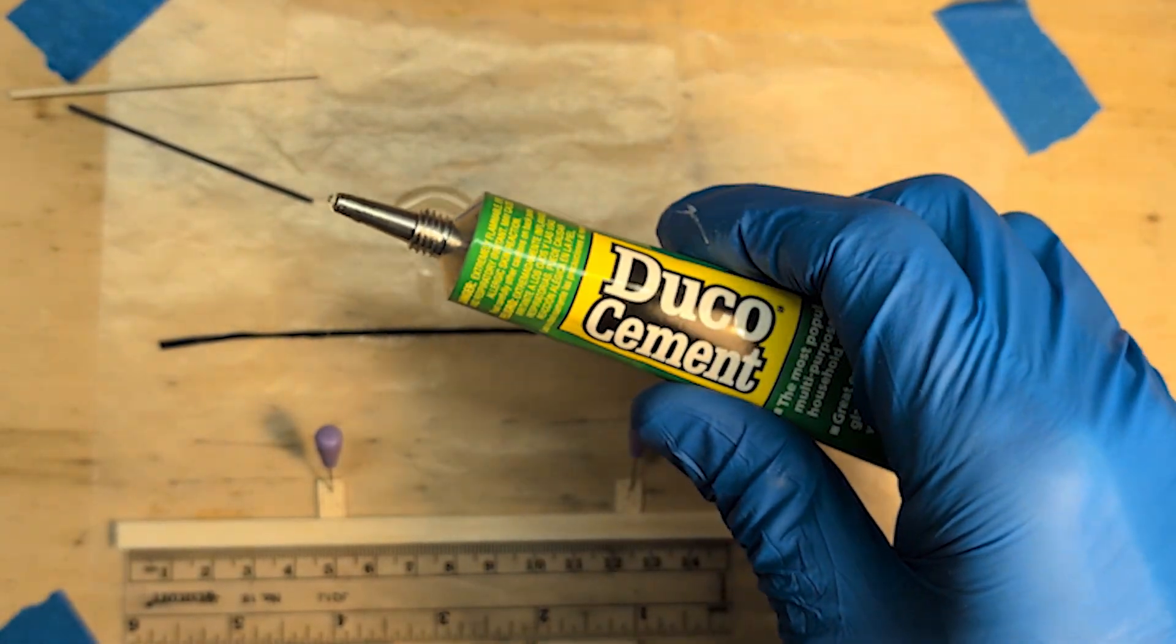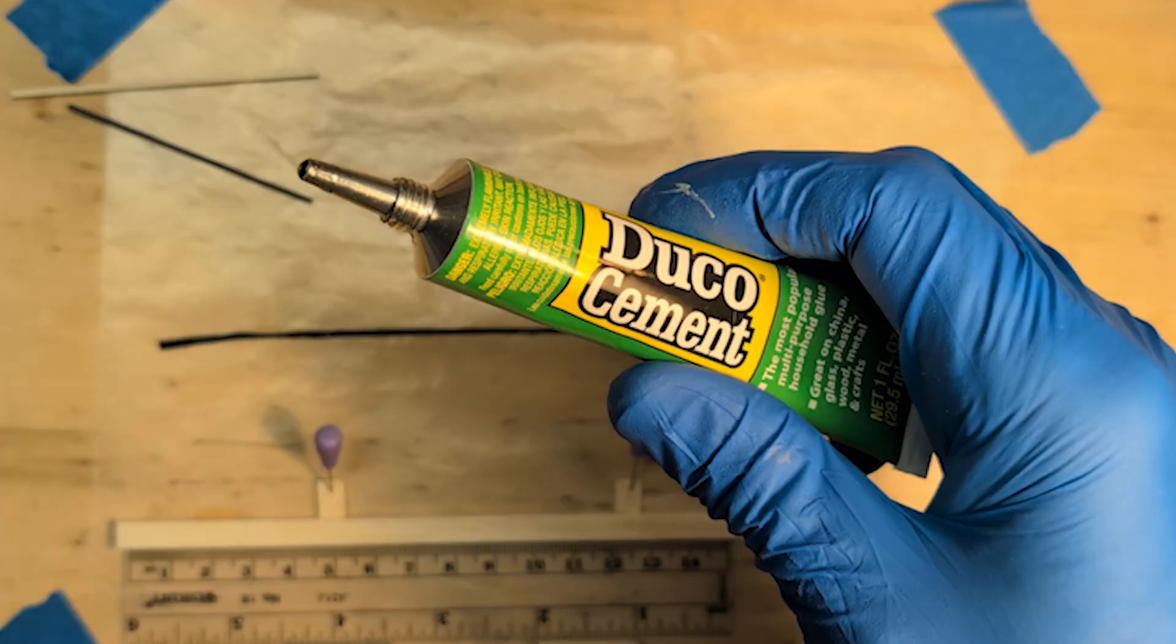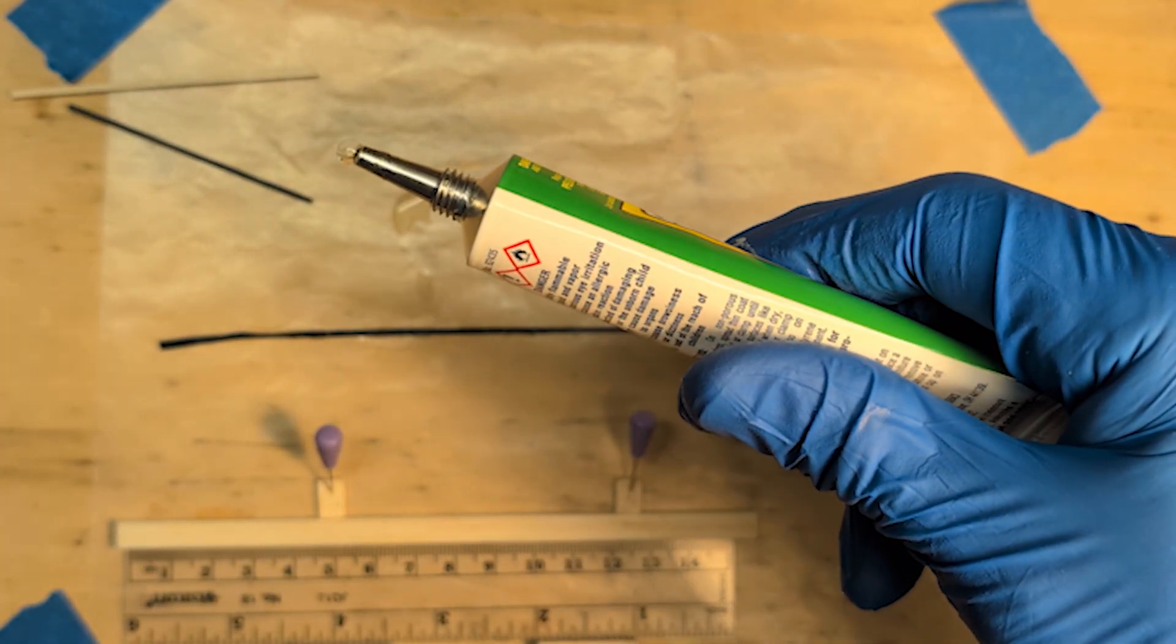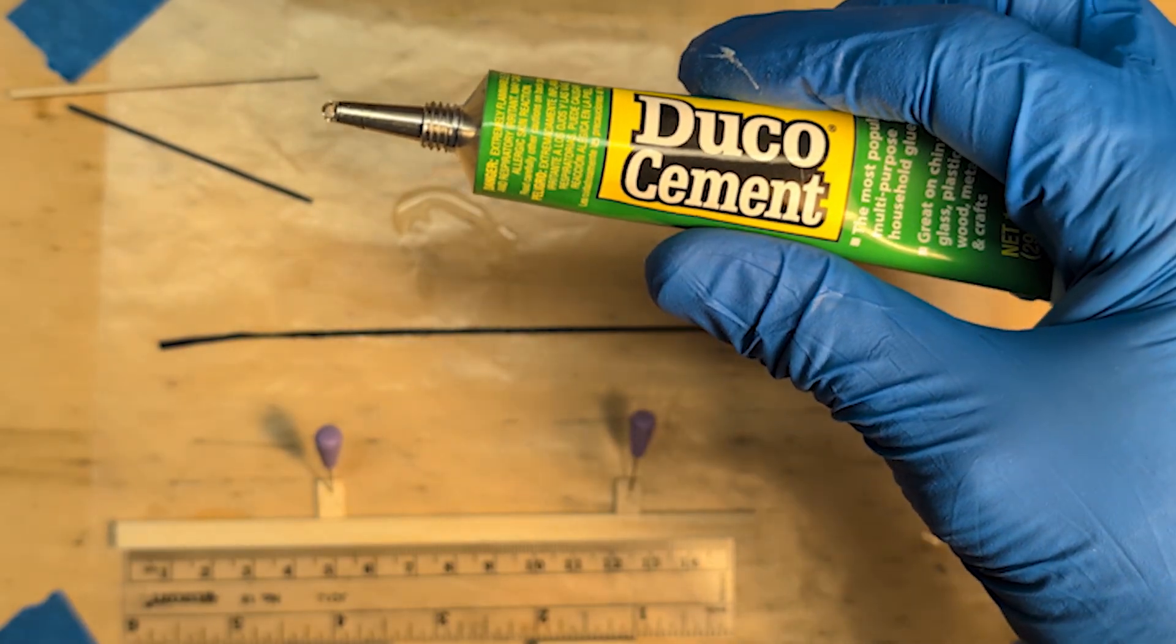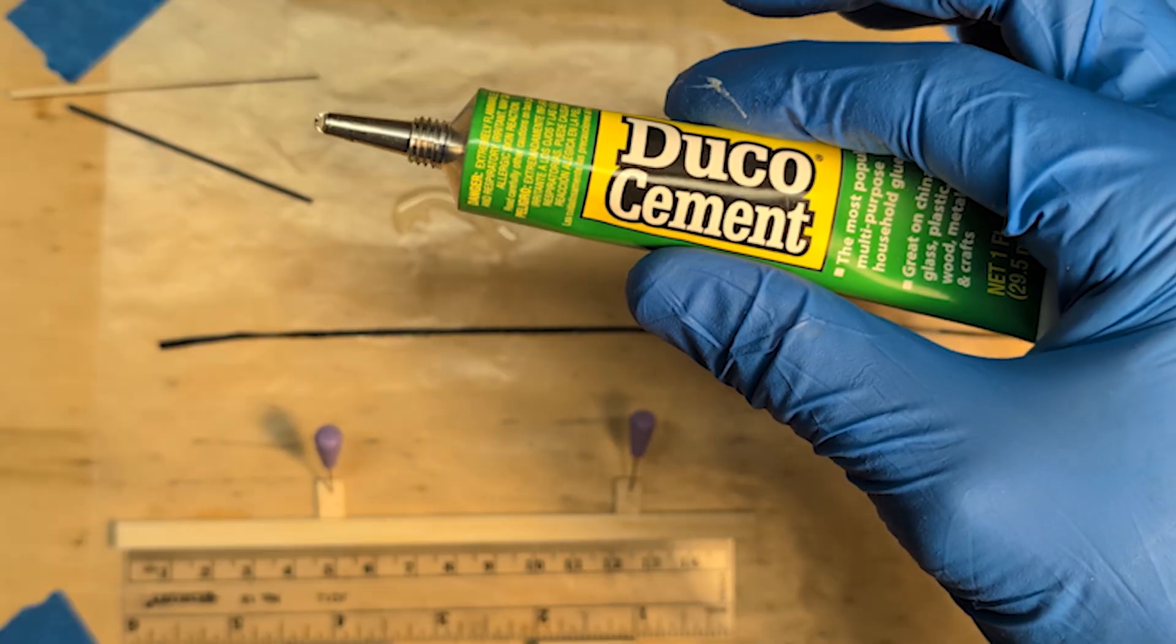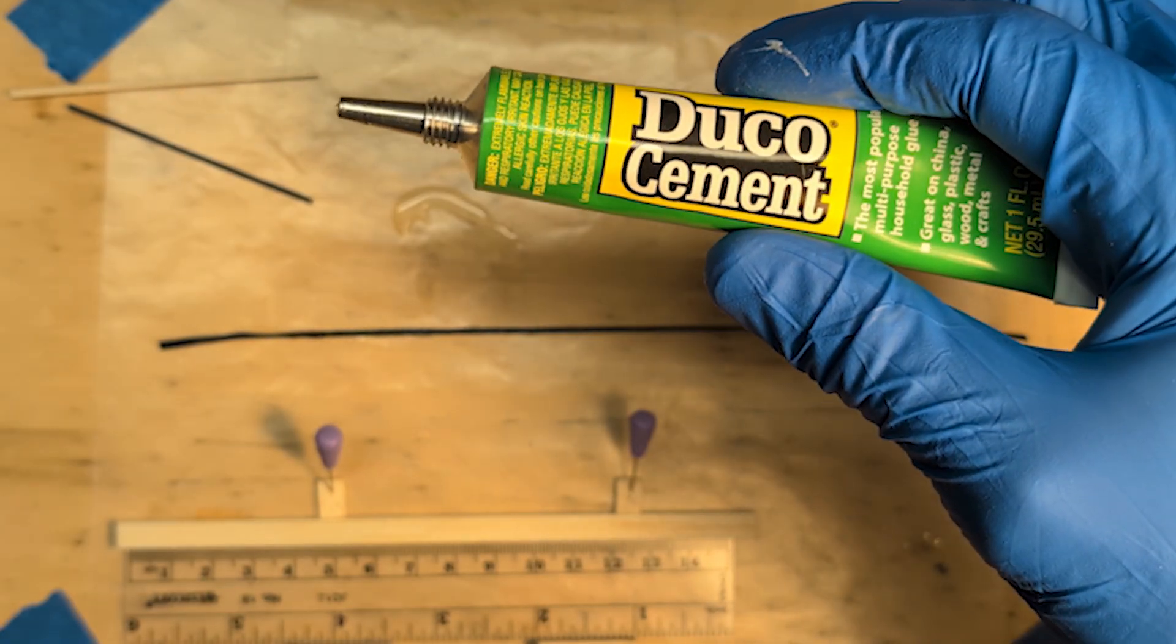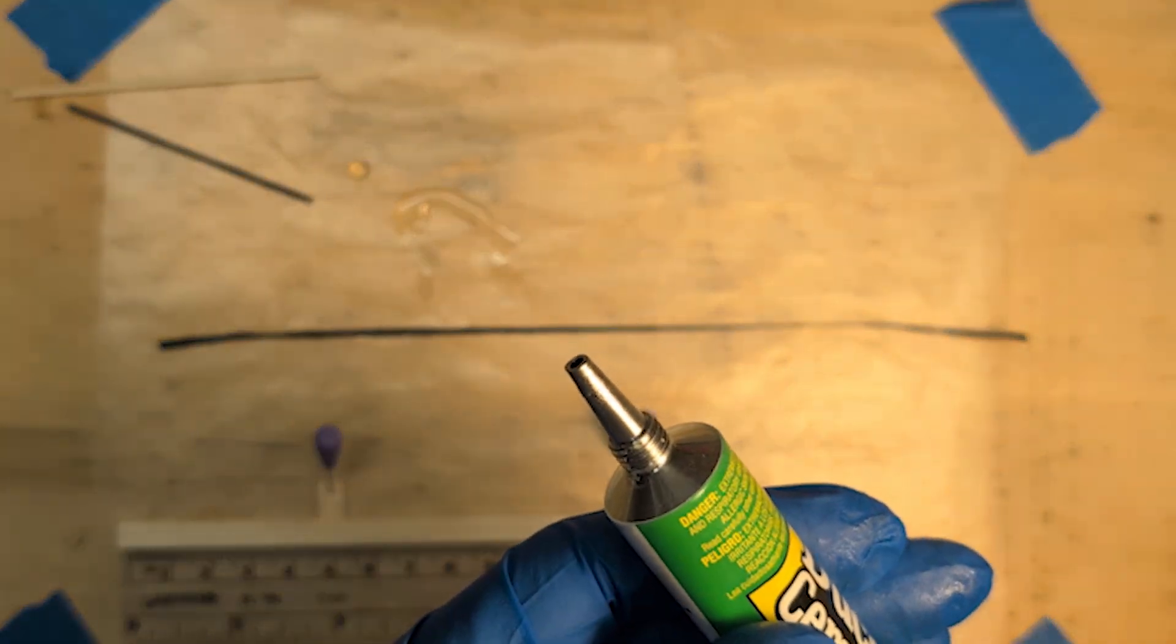So one thing you can learn about a bottle of Duco cement is if you see that the glue is wicking out as soon as I pick it up, if you squeeze the Duco cement bottle without actually squeezing it, just putting a little pressure in this direction, it goes back in. So this direction goes out, this direction goes in. So that way you can control the glue a little bit.